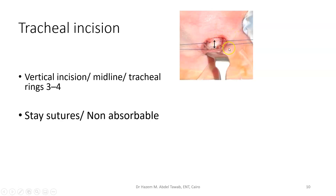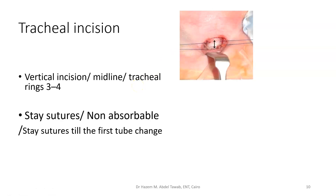You will have a non-absorbable suture passed through and tied after cutting the needle. Afterwards, fix them on the chest — one on the right, one on the left — and write on them 'right' and 'do not remove,' and 'left' and 'do not remove.' At that time only, open the tracheal slit between the third and fourth tracheal rings and insert the tracheostomy tube. Stay sutures remain until the first tube change, when you have established and secured the tracheostomy tract — usually around seven to ten days.